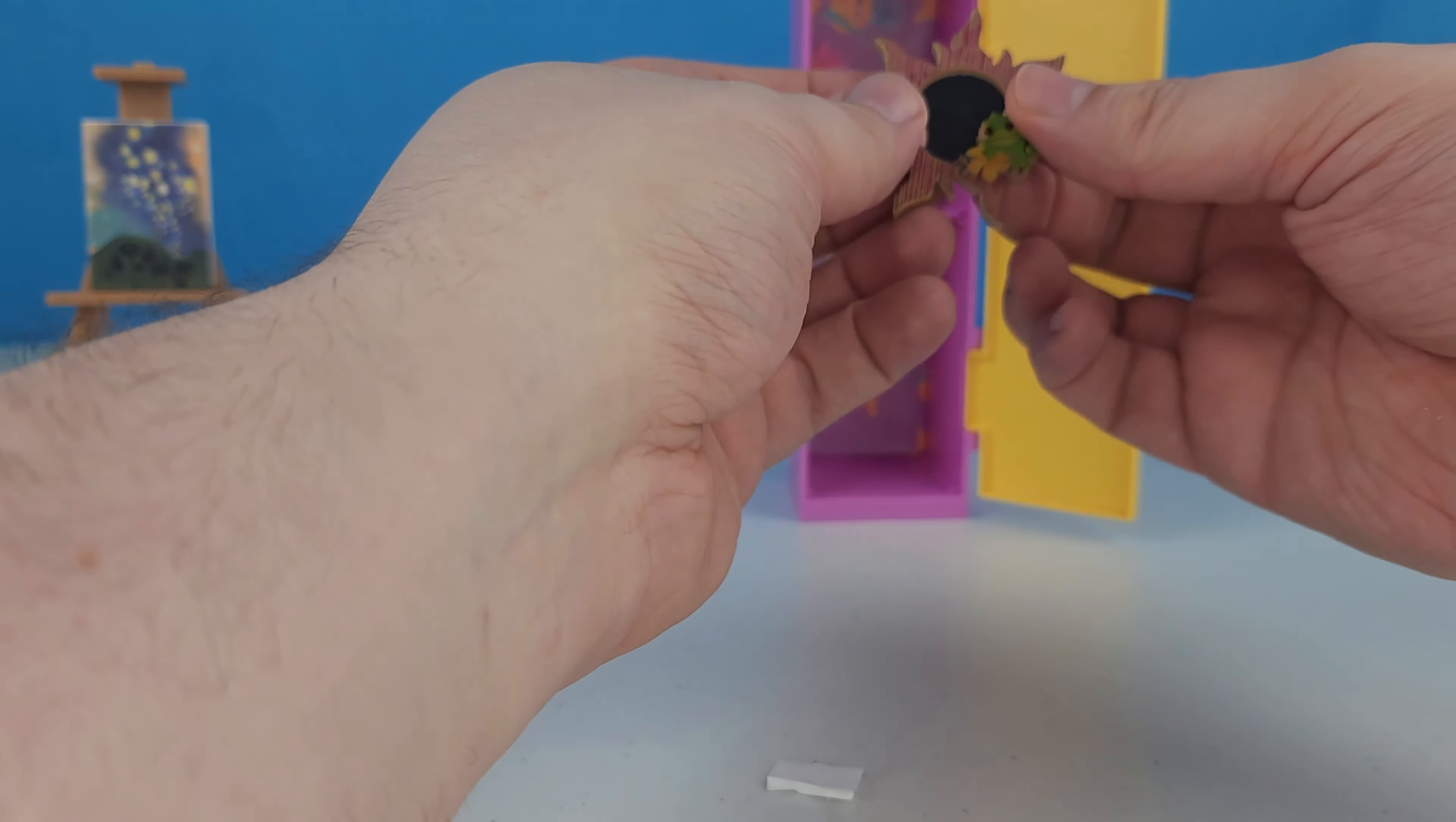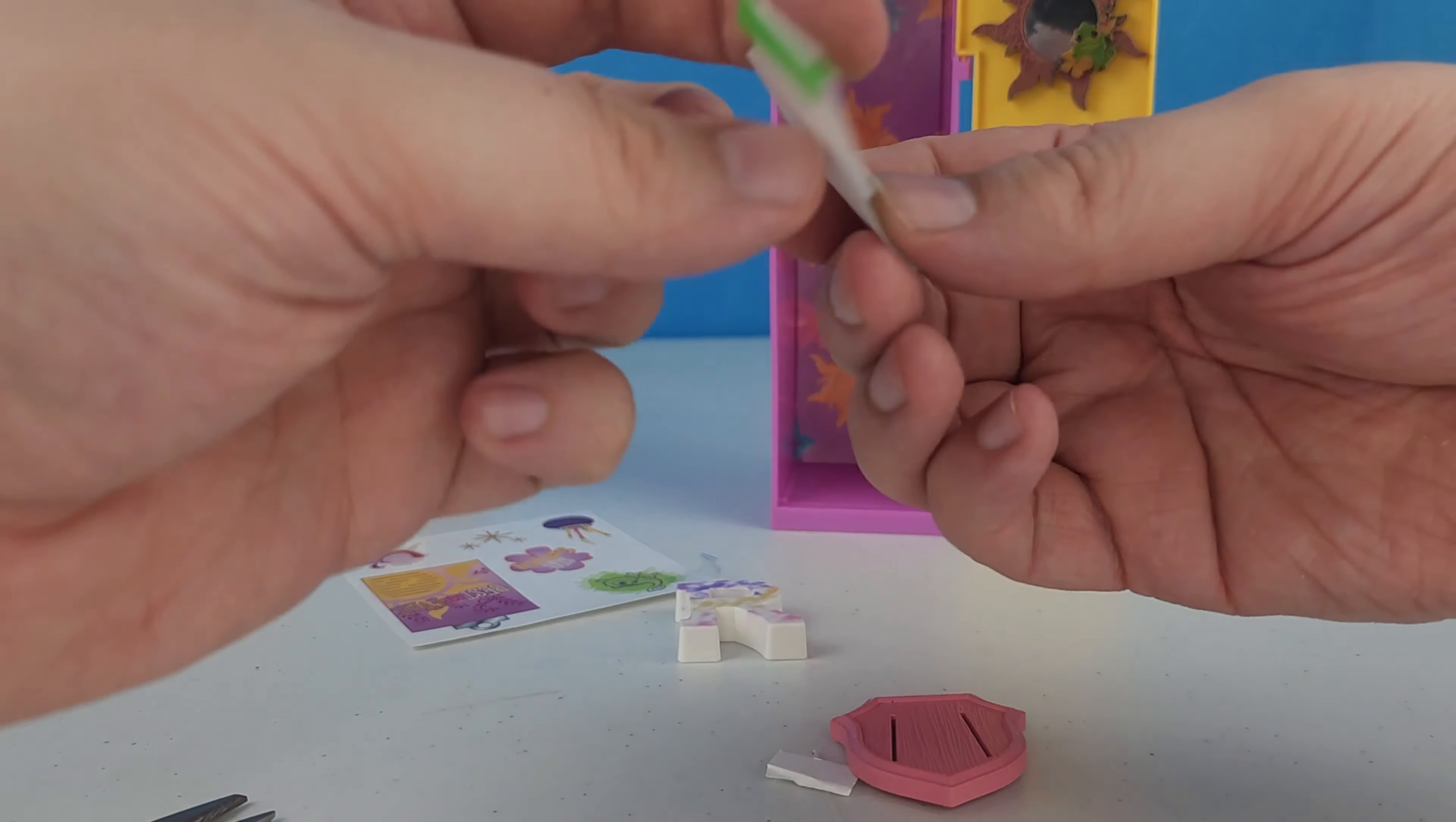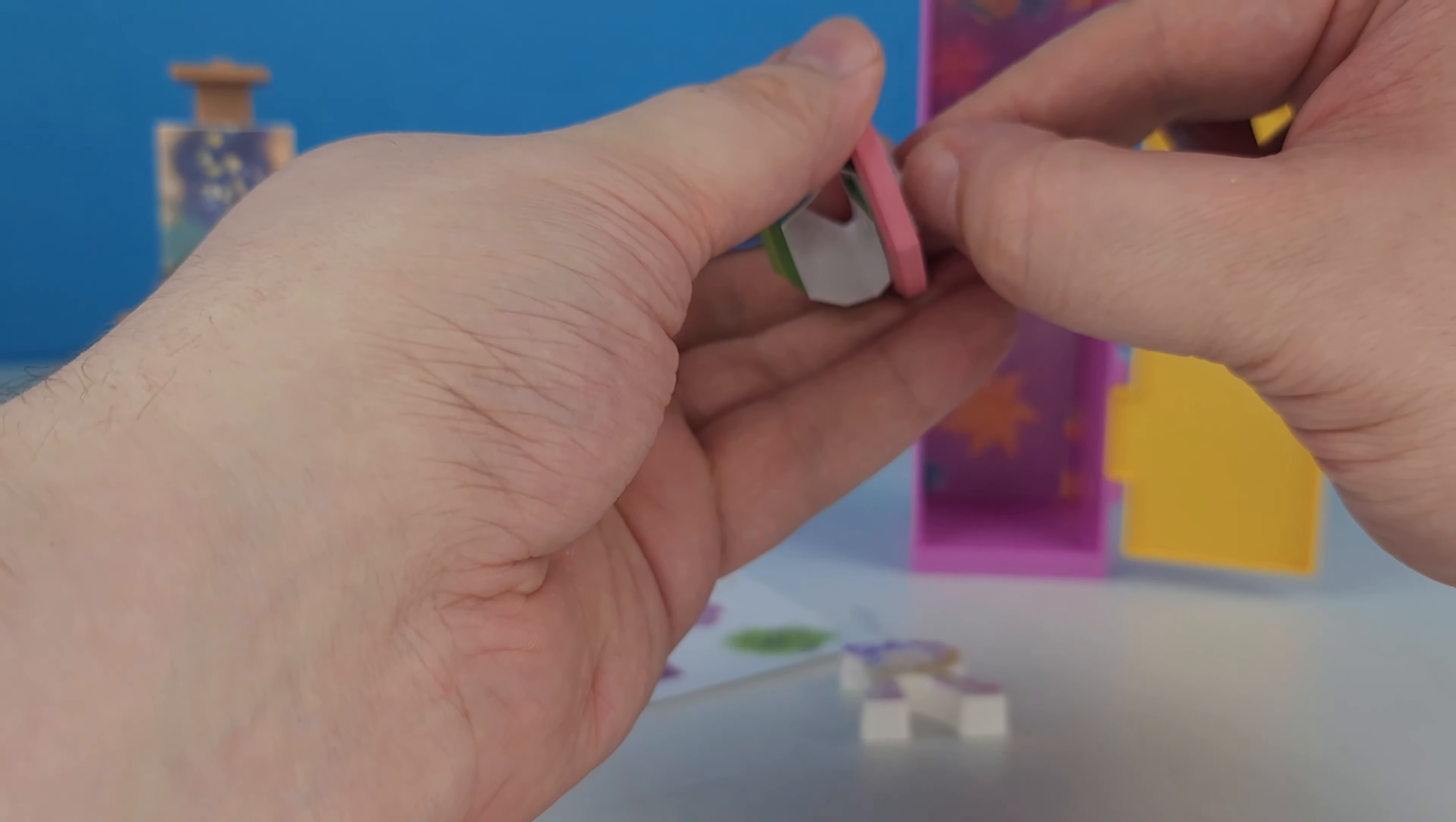And we just peel the sticky stuff off and then it goes right on the inside of the door so she's got a little mirror when she opens her locker. And the other thing that we got was this little backboard and this paper Pascal that we have to fold into the shape of Pascal. That seems scary. All right, and we've got our little Pascal paper little thing and that goes in the back of the locker apparently.